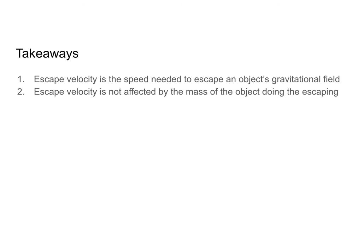Let's talk takeaways. Escape velocity is the minimum speed needed to escape an object's gravitational field, and it is not affected by the mass of the object doing the escaping. So my escape velocity from the Earth is the same as that of an elephant or even the entire Empire State Building. We can see this in the escape velocity equations — the mass of the object doing the escaping cancels out since it appears in both our potential and kinetic energy equations. You now know all about escape velocity — go do some practice problems. Best of luck and happy solving.